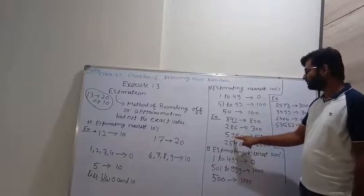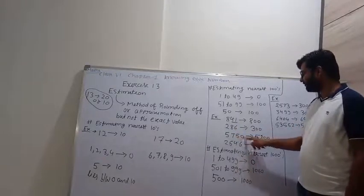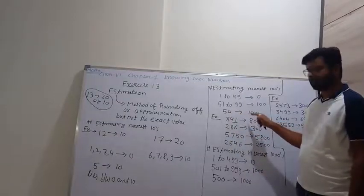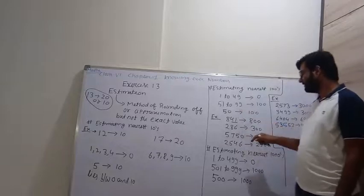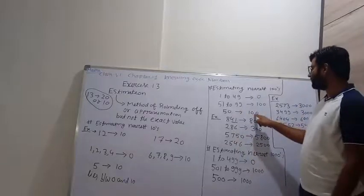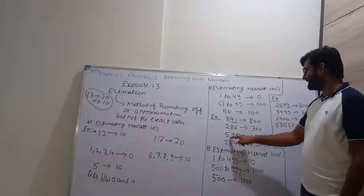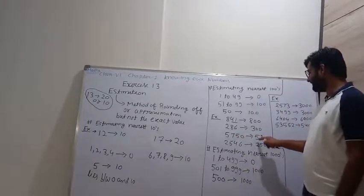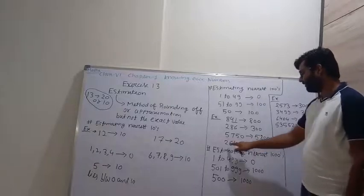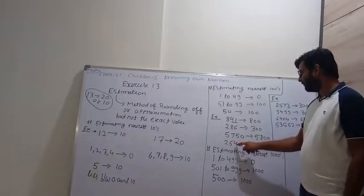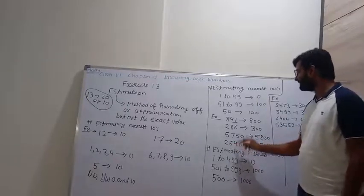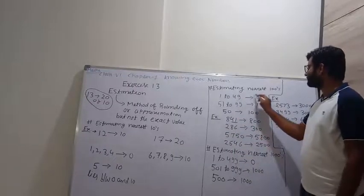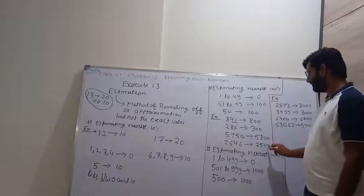For 5750: 50 is the exact midpoint value, so we convert it into the next hundred. 5750 is converted as 5800. Now, 2546: here 46 lies between 1 to 49, so 2546 becomes 2500.